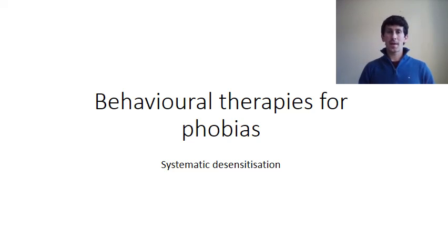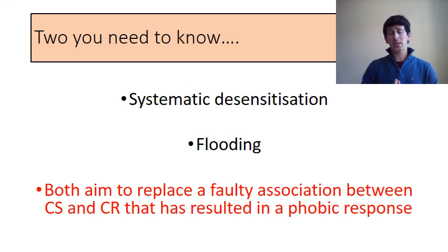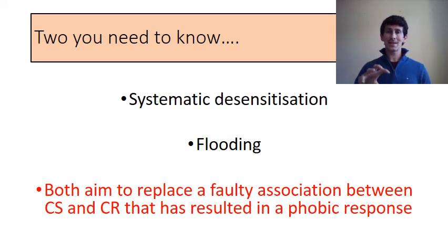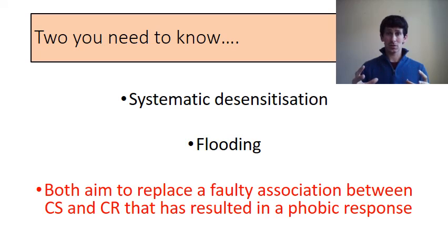This video is going to look at the behavioral therapies for phobias, and the first one we're going to be looking at is systematic desensitization. On your specification, there are two types of behavioral treatment you've got to know: systematic desensitization and flooding. The aim of both is to replace the faulty association between the conditioned stimulus and the conditioned response — like in Little Albert's case, the white rat and the crying — to teach the person there is no need to have this phobia.